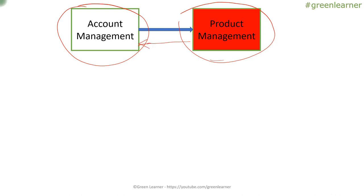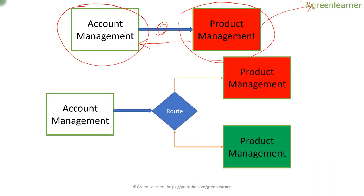Now, this Product Management has been converted into microservices architecture, and I have to come up with a strategy at this point — whether to call the old Product Management module or the new microservice. Looking at the new diagram, the direct connection that was happening earlier now has to be replaced by a route.